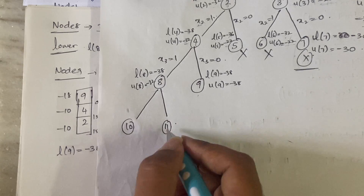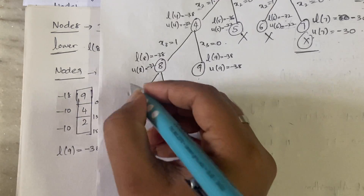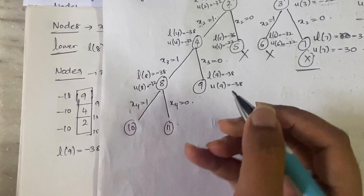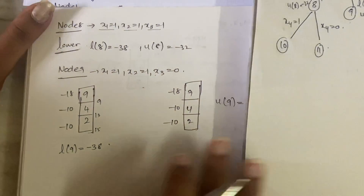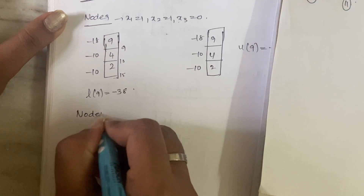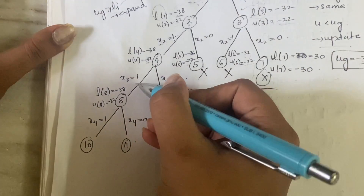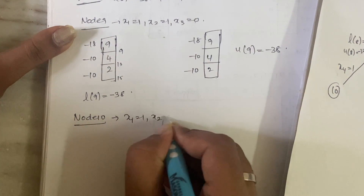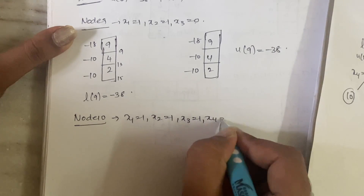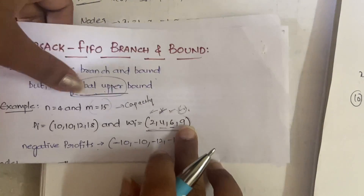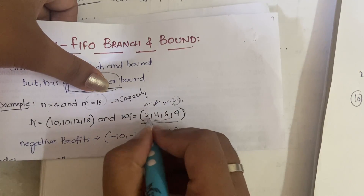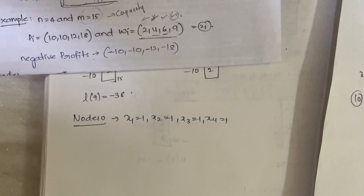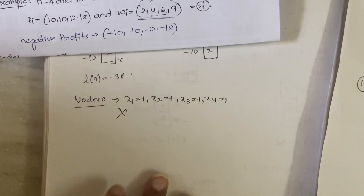Expanding node 8 gives nodes 10 and 11. For node 10, the condition is x1=1, x2=1, x3=1, and x4=1 — that means all values must fit into the knapsack. Total weight would be 2+4+6+9=21, but the knapsack does not have that capacity, so we need not consider node 10.